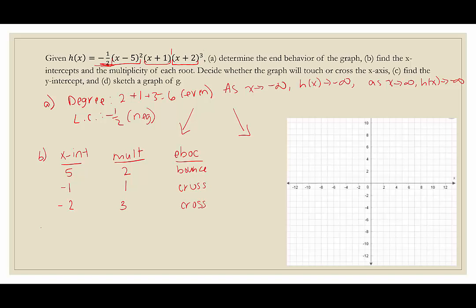For the y-intercept, there's no x-intercept at 0, so we plug in 0 for x. That gives negative one-half times (0 minus 5) squared times (0 plus 1) times (0 plus 2) cubed, which equals negative one-half times 25 times 1 times 8. Half of 8 is 4, and 4 times 25 is 100, but the negative makes it negative 100. We won't graph the y-intercept since our graph doesn't go down to 100.